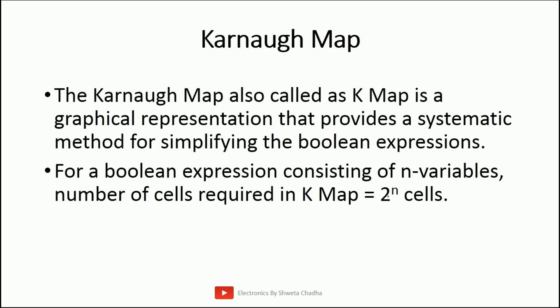K-maps are the graphical representation that provides a systematic method for simplifying Boolean expressions. For a Boolean expression consisting of n variables in a K-map, we are supposed to have 2 raised to the power of n cells. For example, a 2-variable K-map will have 4 cells, and a 3-variable K-map will have 8 cells. All the total possible combinations from the truth table represent the total number of cells.